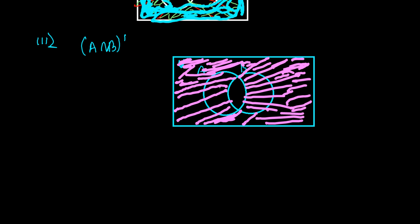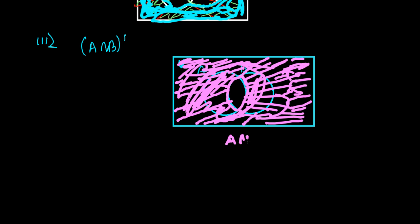You can color them also if you want, but not this intersecting part — we need to protect this part. We're not going to take any element from this part. This is A intersection B, and this is A intersection B complement.